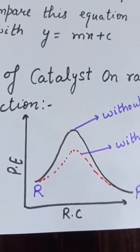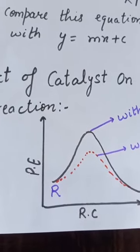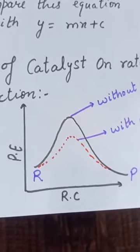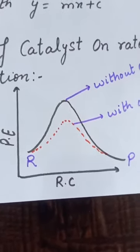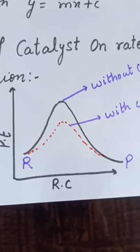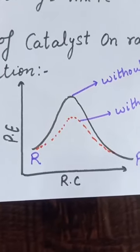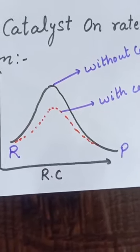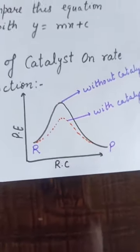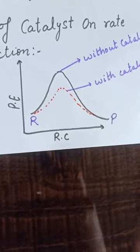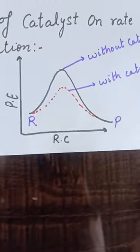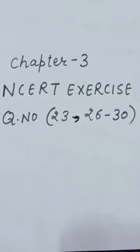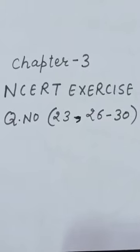These are the two factors which affect the rate of reaction: temperature and catalyst. On increasing the temperature, the rate of reaction becomes double, and with the addition of a catalyst the rate of reaction becomes faster because the catalyst provides an alternate pathway or reaction mechanism by reducing the activation energy barrier, and therefore reactants convert faster into products. This is all about temperature dependence on the rate of reaction. After studying this topic, you can solve NCERT exercise questions number 23 and from question number 26 to 30.